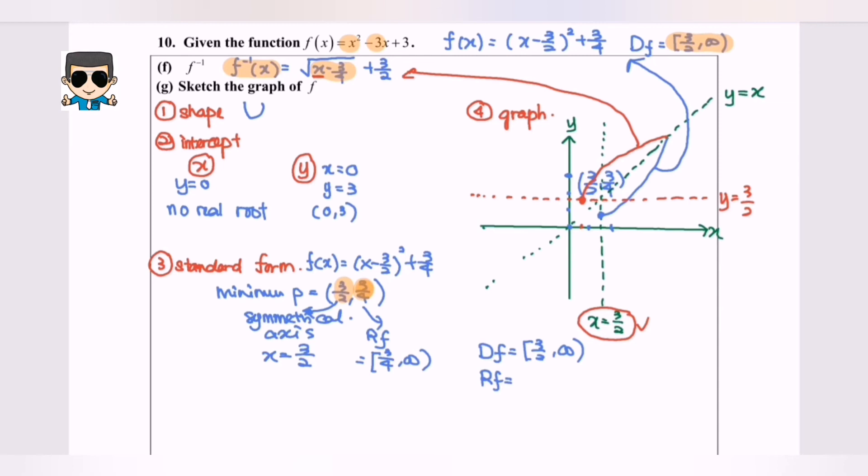Now let's look at the domain for F inverse. The domain for F inverse refers to the X value, so the X value will be 3 over 4 until infinity.